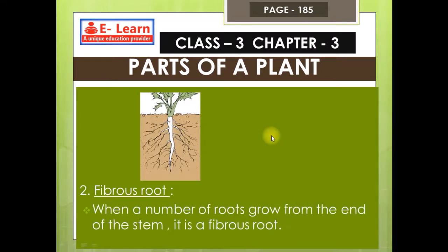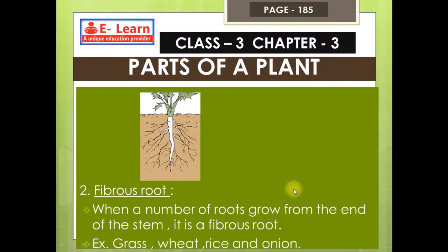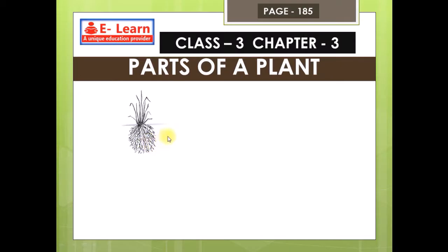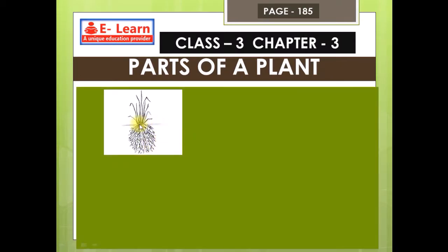Number two: fibrous root. When a number of roots grow from the end of the stem, it is called a fibrous root. For example, grass, wheat, rice and onion. You can see in the picture — this is the end of the stem, and the roots grow from the end. We call it a fibrous root.